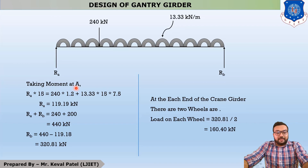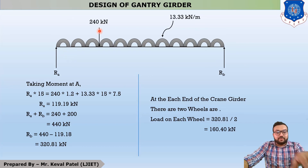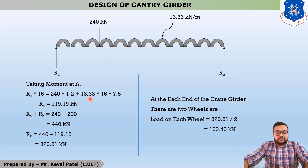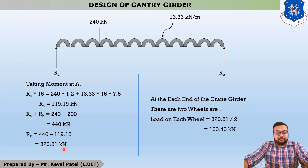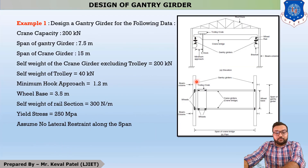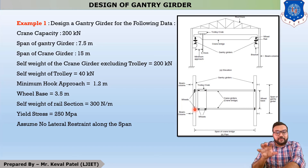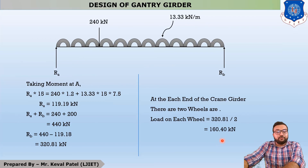Taking moment at A: RB × 15 = 240 × 1.2 + 13.33 × 15 × 7.5. Solving, RB = 119.19 kN and RA = 320.81 kN. Since there are two wheels on the maximum-load side — wheel number 1 and wheel number 2 — each wheel takes 320.81 ÷ 2 = 160.40 kN. This is the static wheel load per wheel.